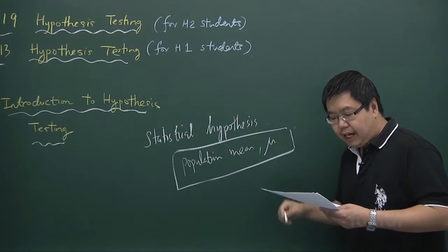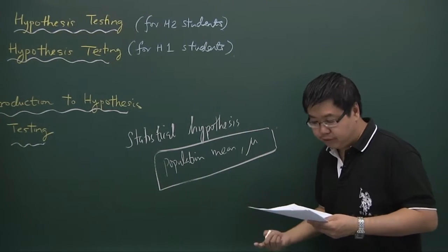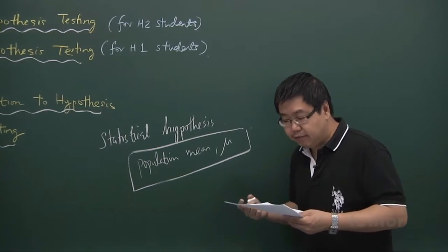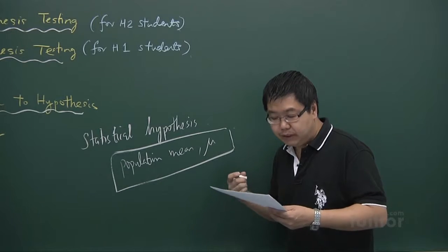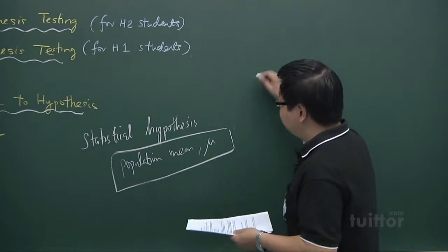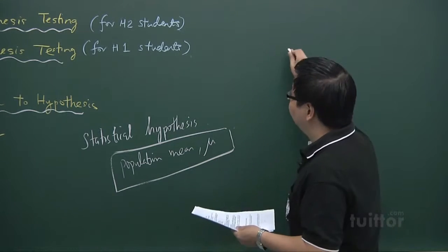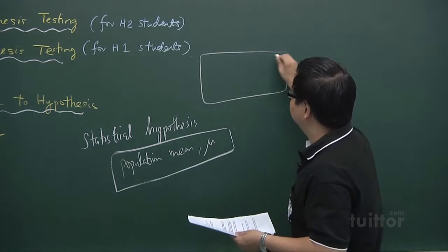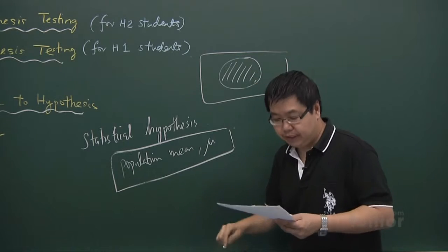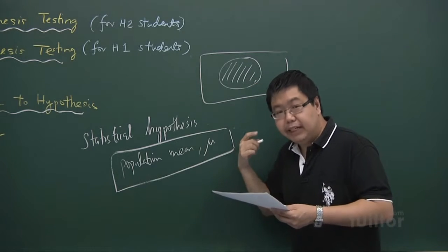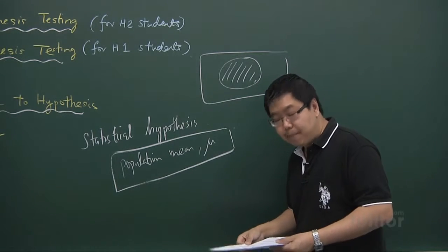The hypothesis that a person makes as a claim can be true or can be false. We usually test its validity by using sample data collected from the population. So when we want to determine whether a statistical hypothesis is true or false, we will take a sample from the population, study that sample, and then make a decision whether our statement is true or false.